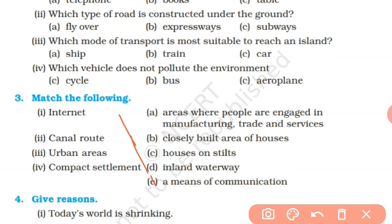Second match: Canal route - it falls under waterways, specifically inland waterways. Third: Urban areas - areas where people are engaged in manufacturing, trade and services. People in urban areas are involved in manufacturing, trade and services.